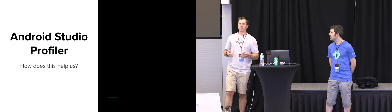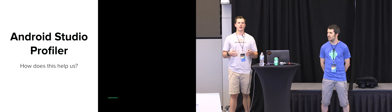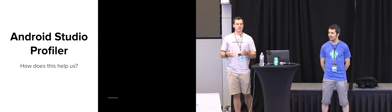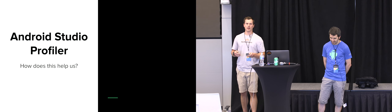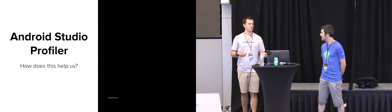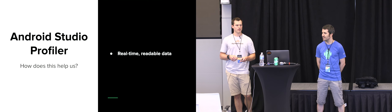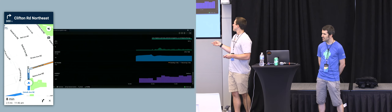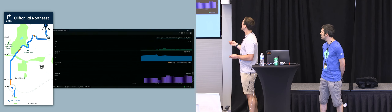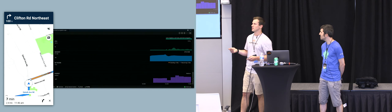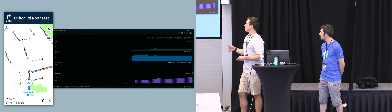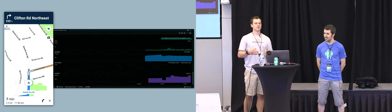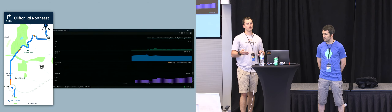One of the first tools we looked at — probably the most obvious for Android developers — is the Android Studio Profiler. There are a lot of great things about it that we naturally gravitated to first. The first benefit is real-time readable data. Here's that same GIF again, but this time with the Android Studio Profiler populated on the right side. You can see it covers all the areas we want to look at: CPU, memory, network, and energy. This is great because we can run the SDK and see in real time what's happening from a performance perspective and get an idea of how we're performing on a given device.